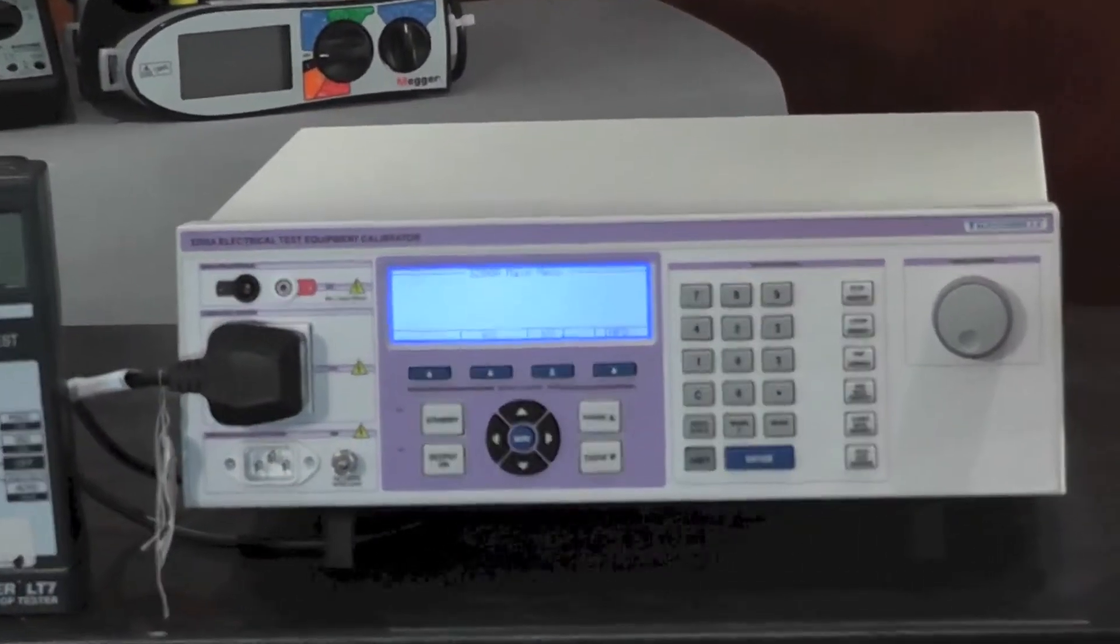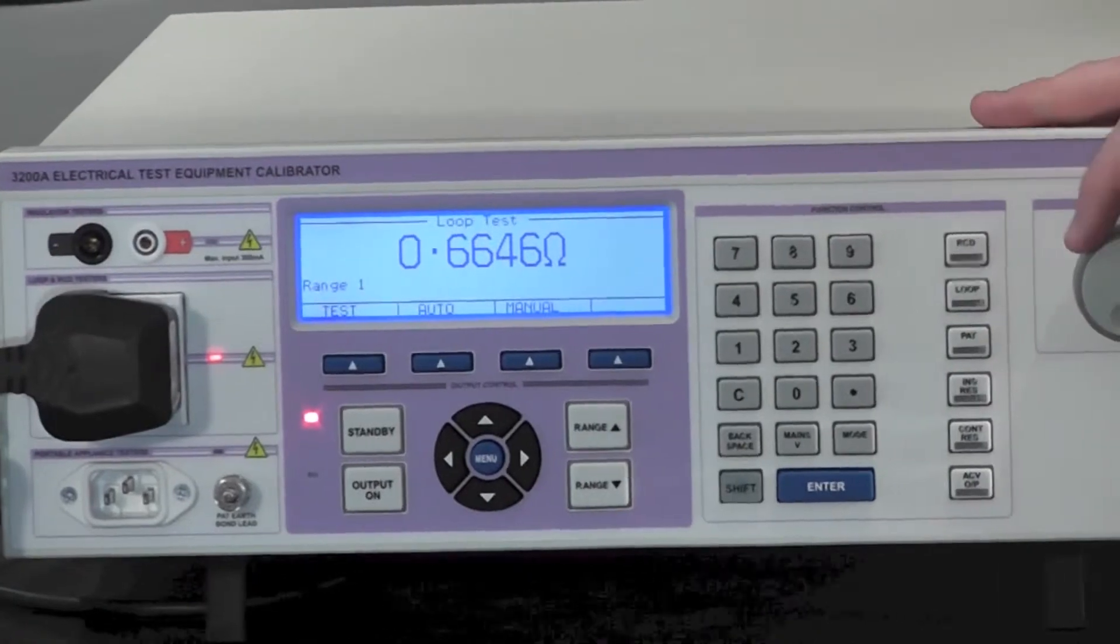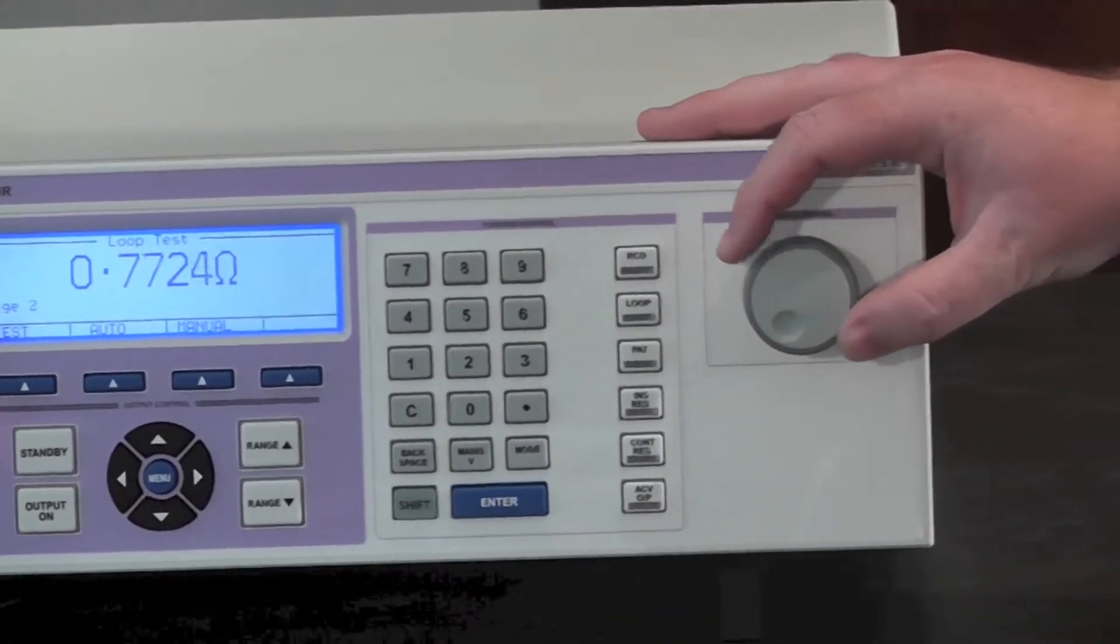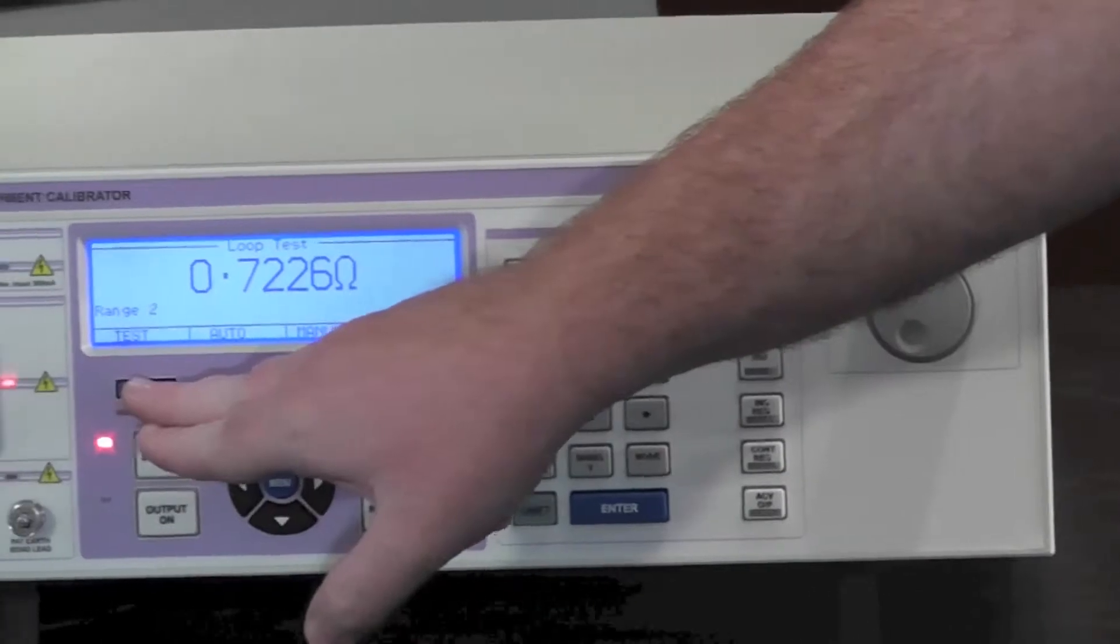To test a loop tester, press the loop key, select the range using the digital control and press test.